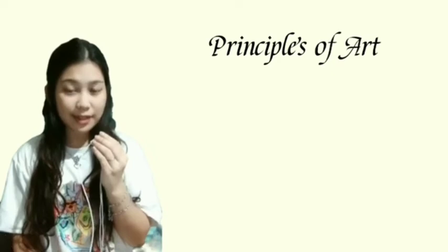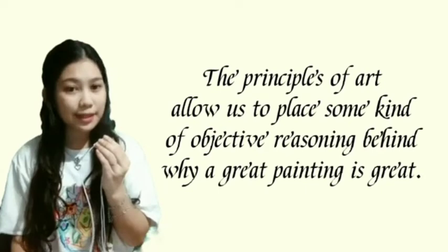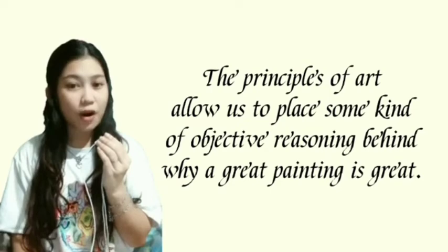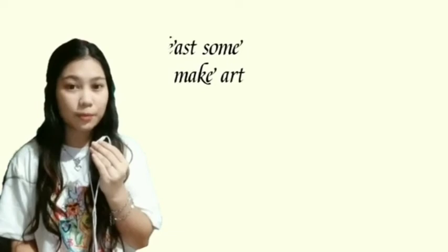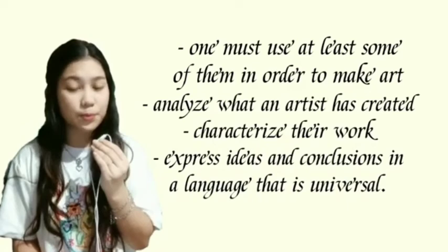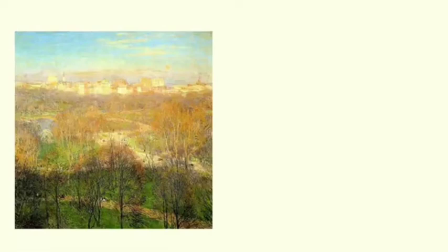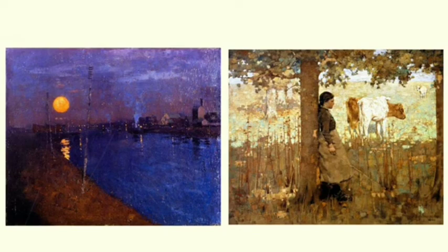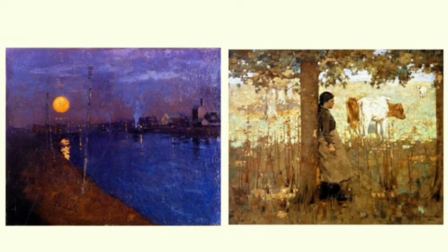Hello everyone. This discussion will focus more on understanding the principles of art. This will help us understand the principles of art and give us ideas about how we can spot these principles in artworks. The principles of art allow us to place some kind of objective reasoning behind why a great painting is great. This is important as it keeps us from falling into a vague space where art is no longer able to be defined or critiqued. Understanding and appreciating the fundamentals of art is often what this entails. One must use at least some of them in order to make an art. By understanding the components and rules of art, we can analyze what an artist has created, characterize their work, and express our ideas and conclusions in a language that is universal.